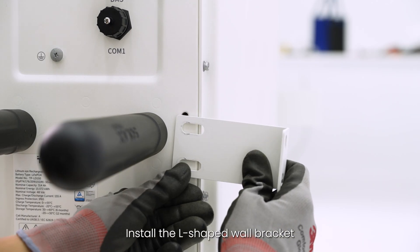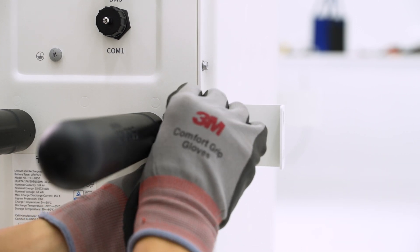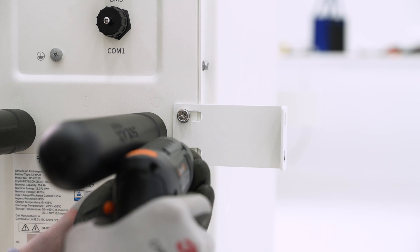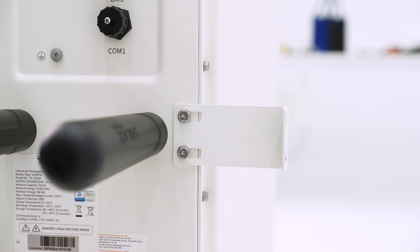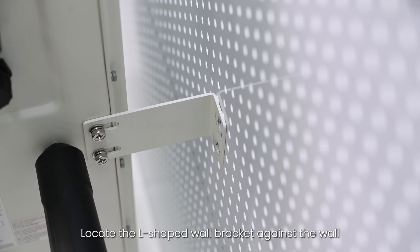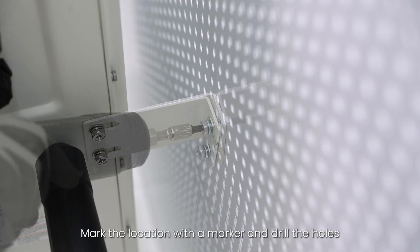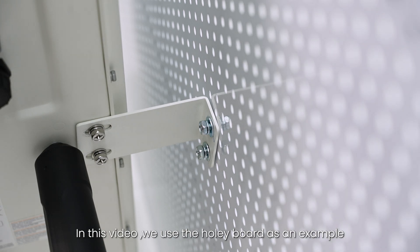Install the L-shaped wall bracket. Remember, do not tighten the screws fully at first. Locate the L-shaped wall bracket against the wall, mark the location with a marker and drill the holes. In this video, we use the holey board as an example.